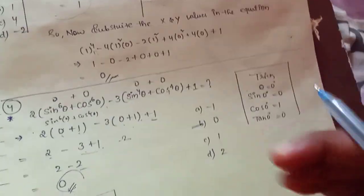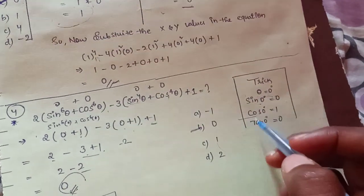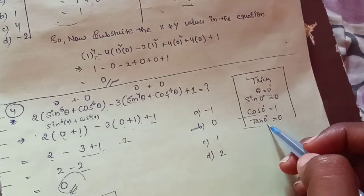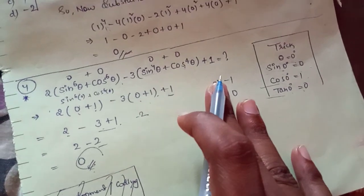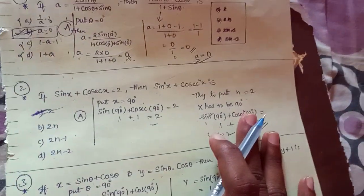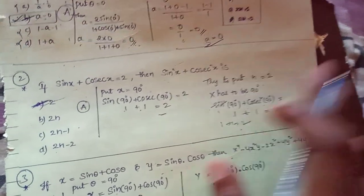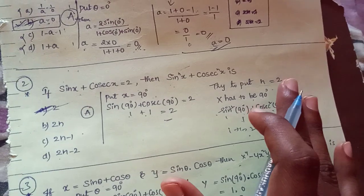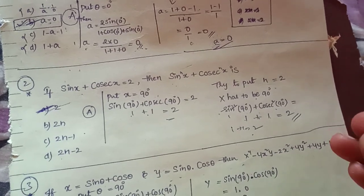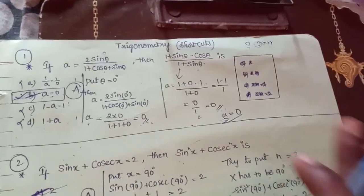So this is the second trick — the 0 or 1 method — simple to find out. When you choose theta equal to 0, sin theta equals 0, cos theta equals 1, and tan theta equals 0. If you apply these shortcuts, LF channel is a one-stop destination for both AP and TS students preparing for this exam. That's it, okay friends, thank you very much.